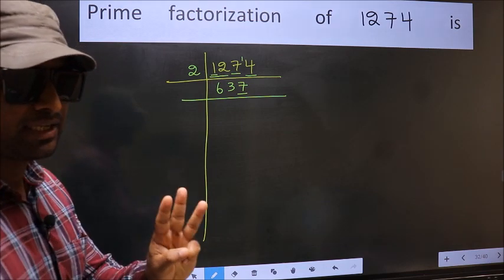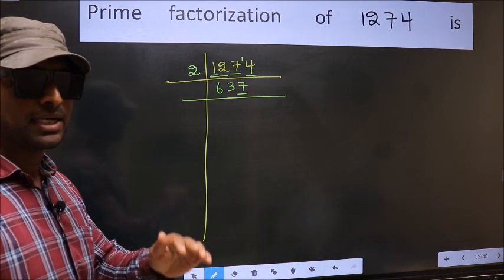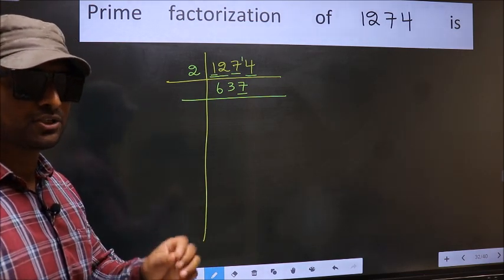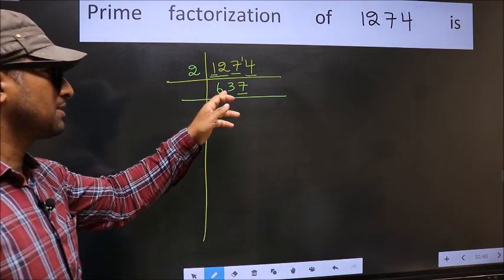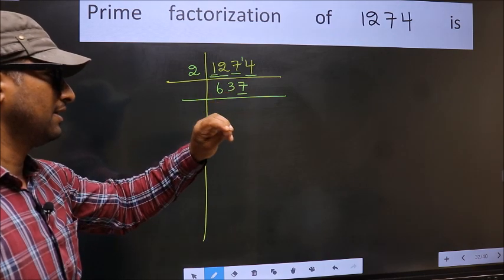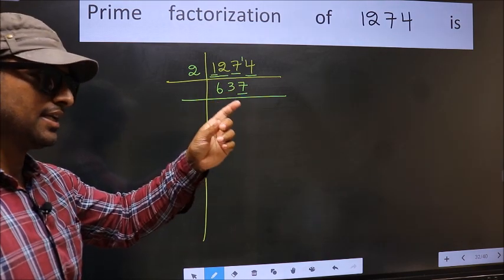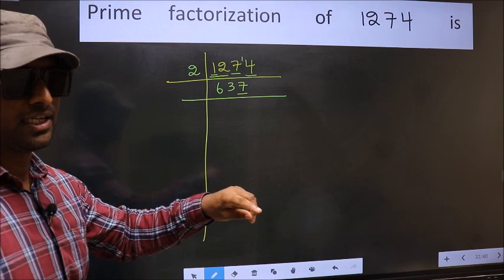Next prime number 3. To check divisibility by 3, we should add the digits. What I mean is 6 plus 3 plus 7. We get 16. Is 16 divisible by 3? No. So this number also not divisible by 3.